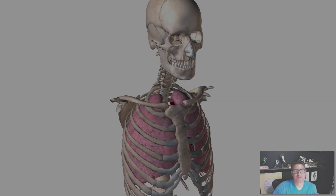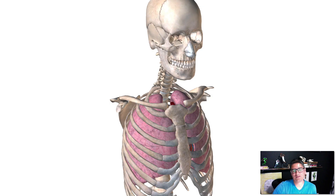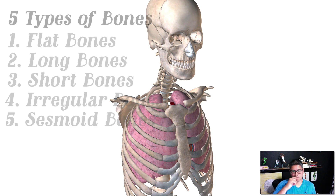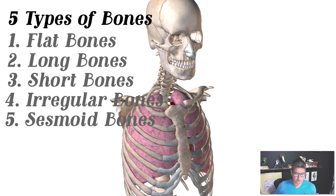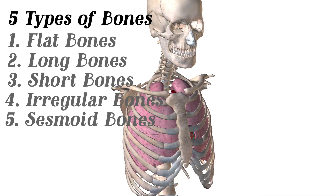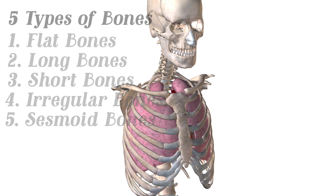We're going to be looking at the five types of bones I have here listed up on the screen. We have your flat bones, long bones, short bones, irregular bones, and the sesamoid bones. So we're going to go one by one just to give you a quick example of the types of bones that we're looking at.